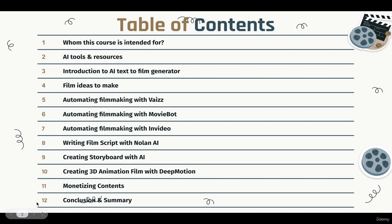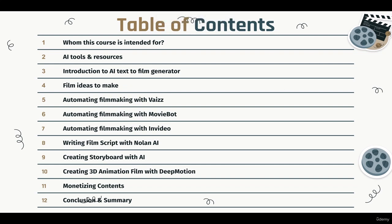Chapter twelve is the final chapter: conclusion and summary. I'll summarize everything we learned and share a few tips and tricks on how to take your AI text-to-film skills to the next level — whether you want to create your own film, start your own film agency, or level up your content creation.